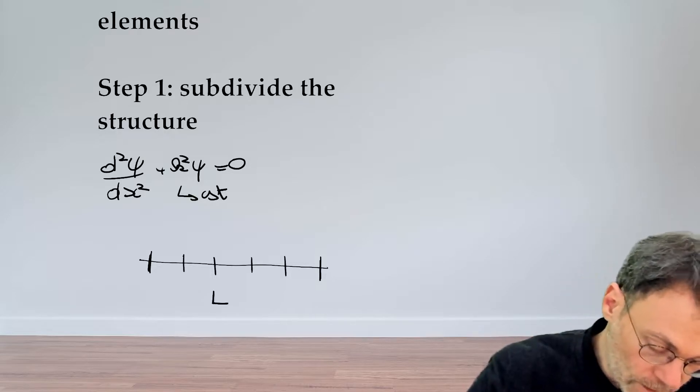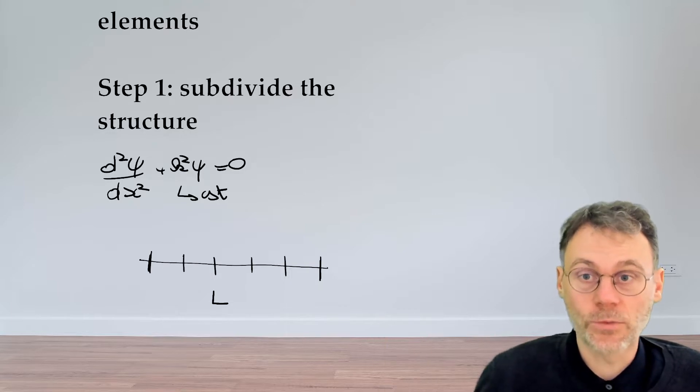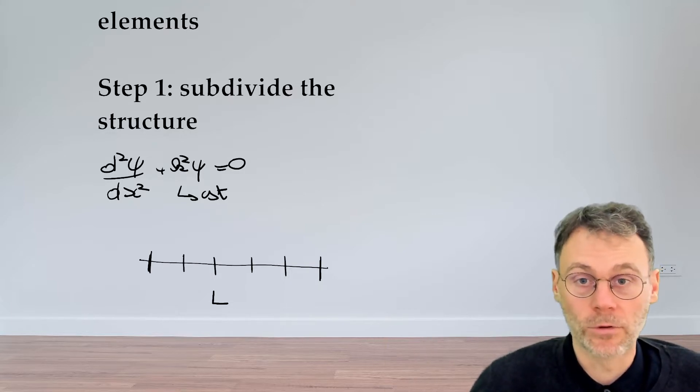We're just going to take that line segment and divide it into an equal number of elements. So we have L elements in total and they all have the same length. That's pretty straightforward. On to step number two here.